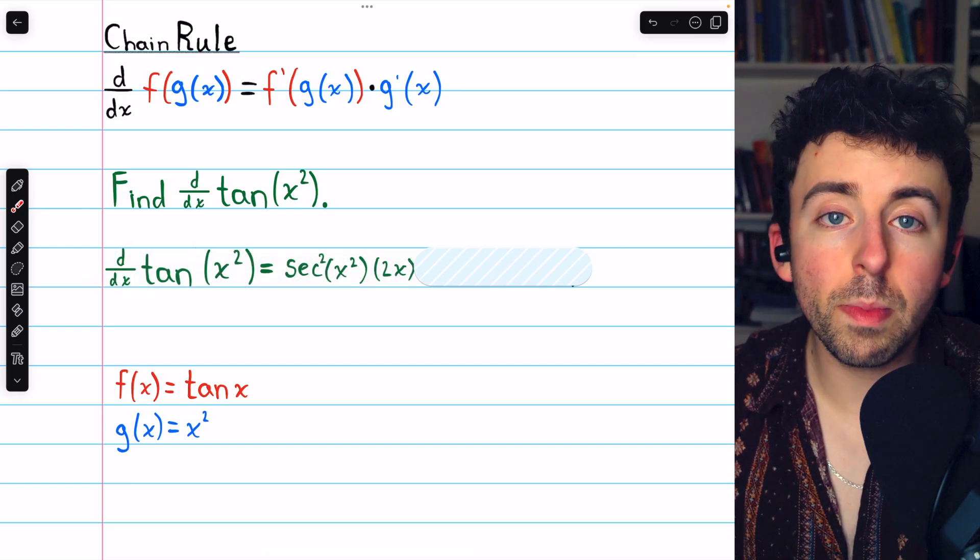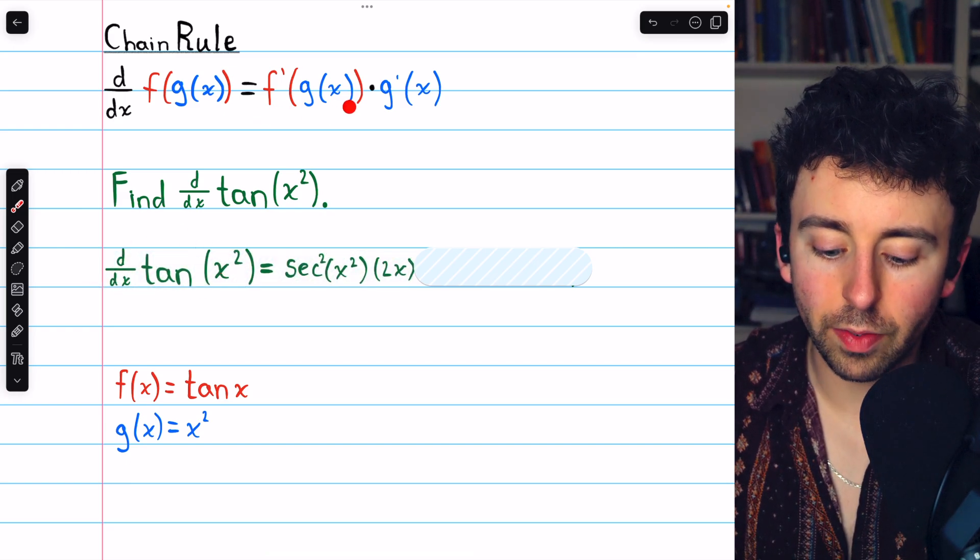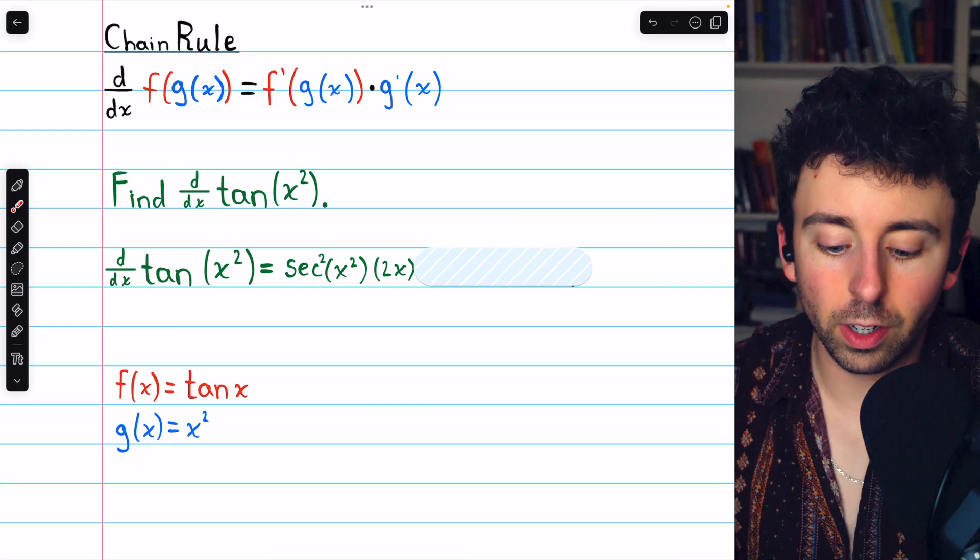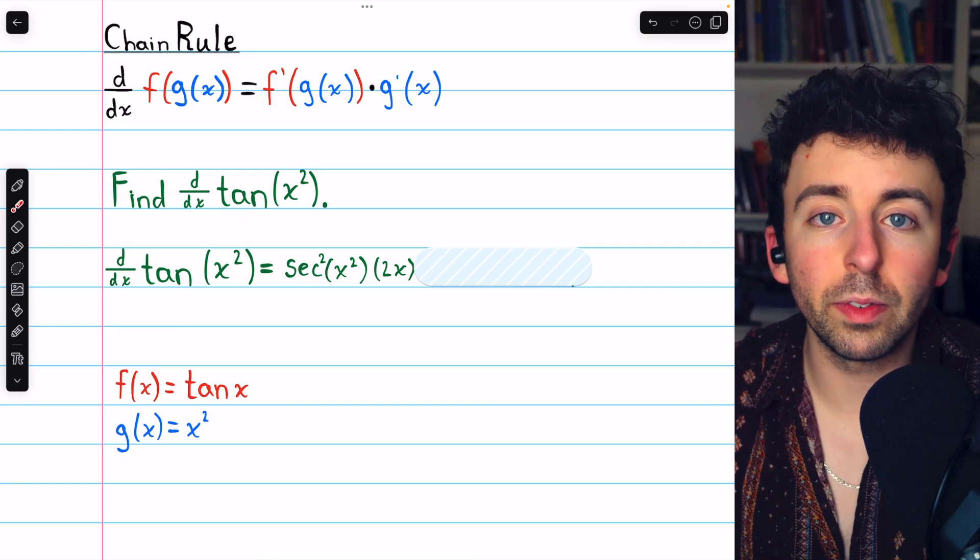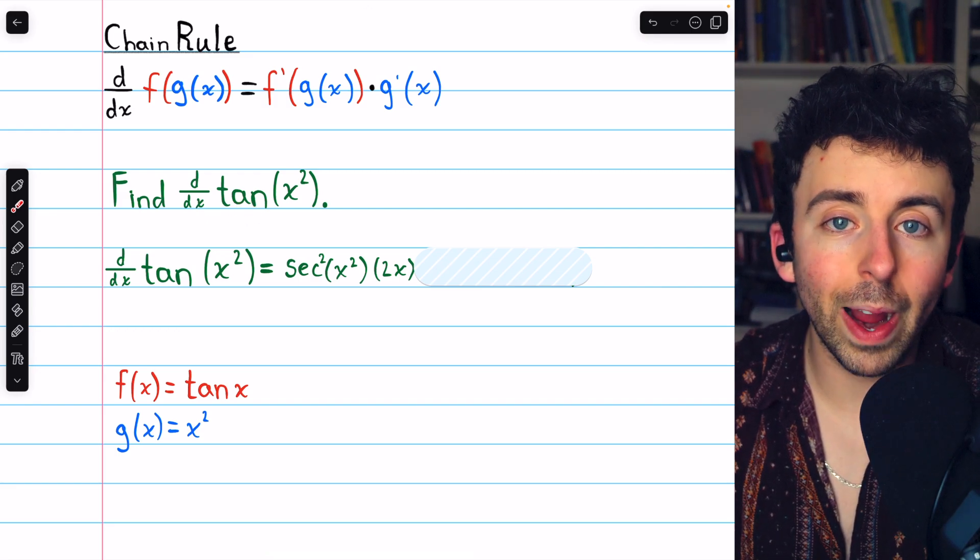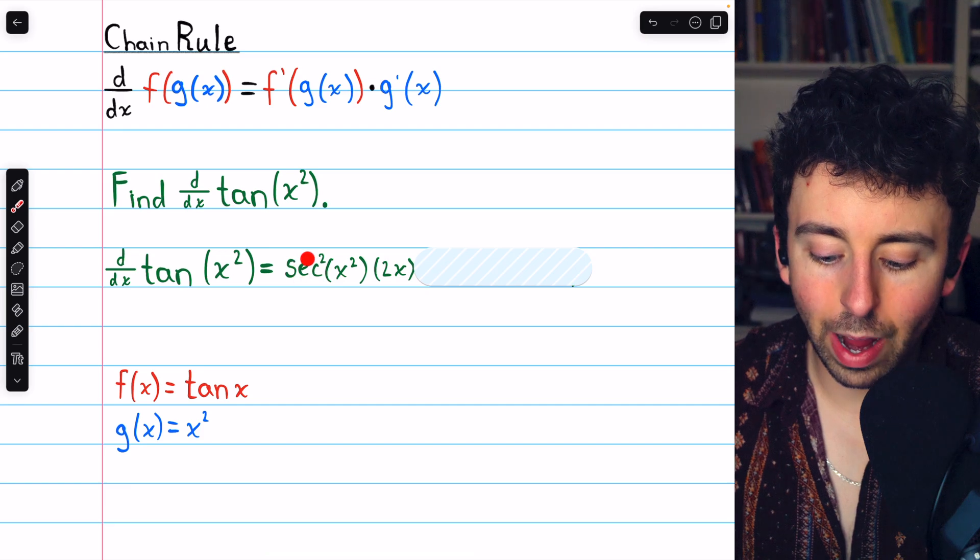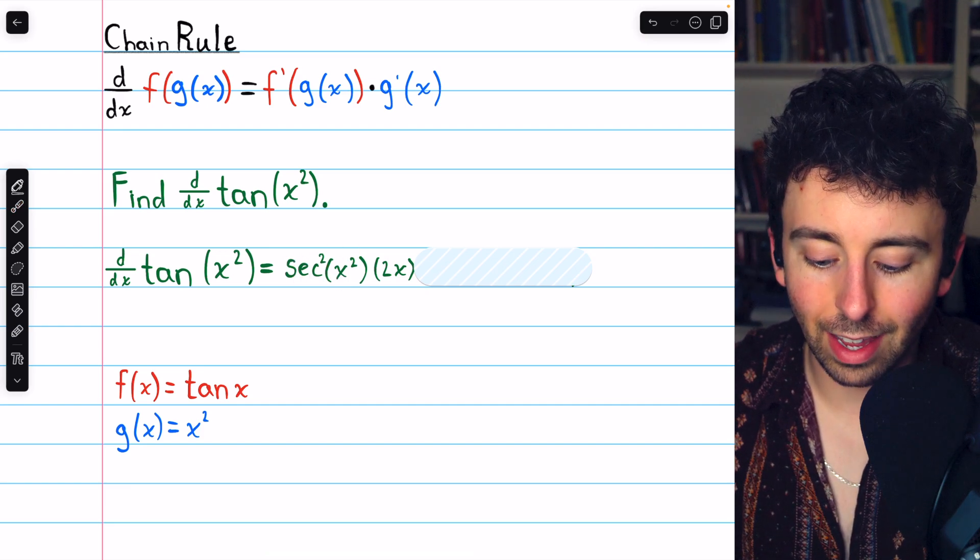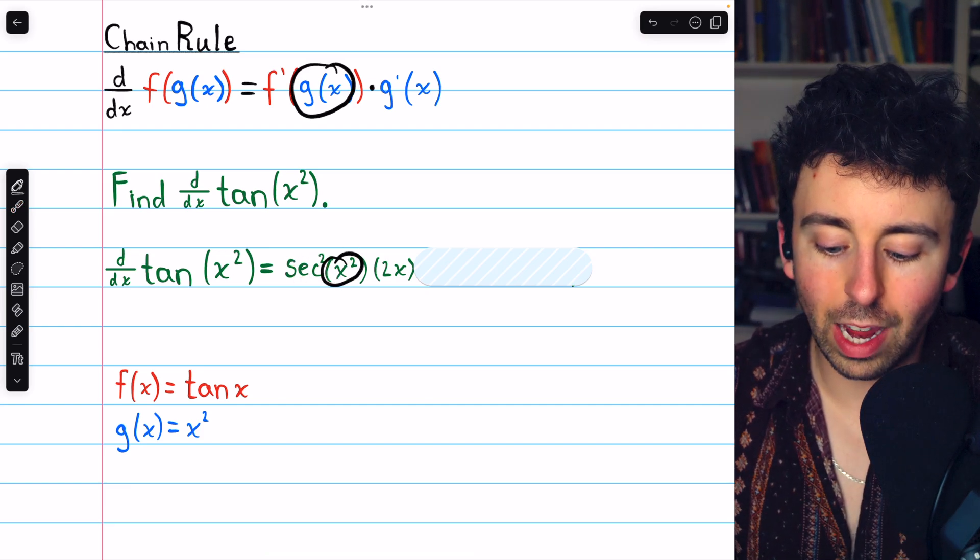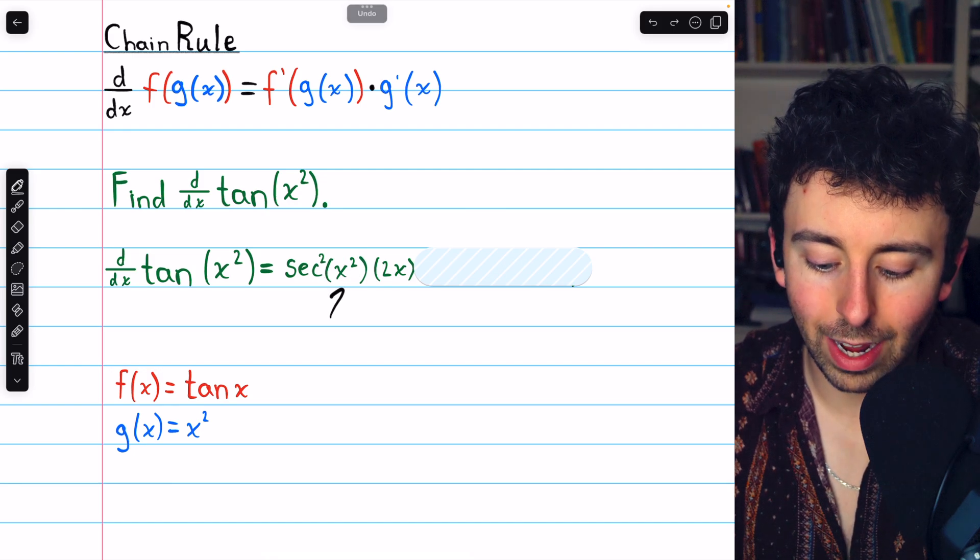To take the derivative, we begin with f prime of g of x. The outside function is tangent, and the derivative of tangent is secant squared. So we have secant squared of the inside function. Remember not to change that inside function, which in our case is x squared.